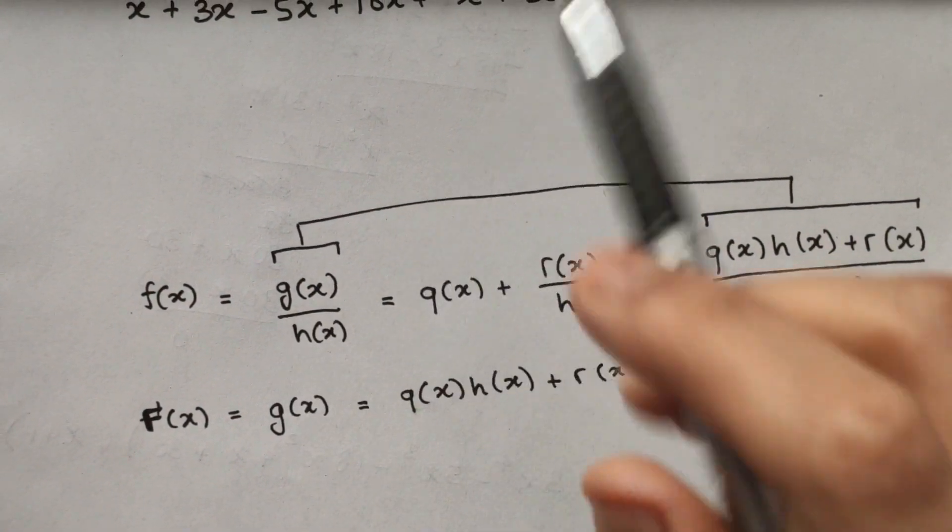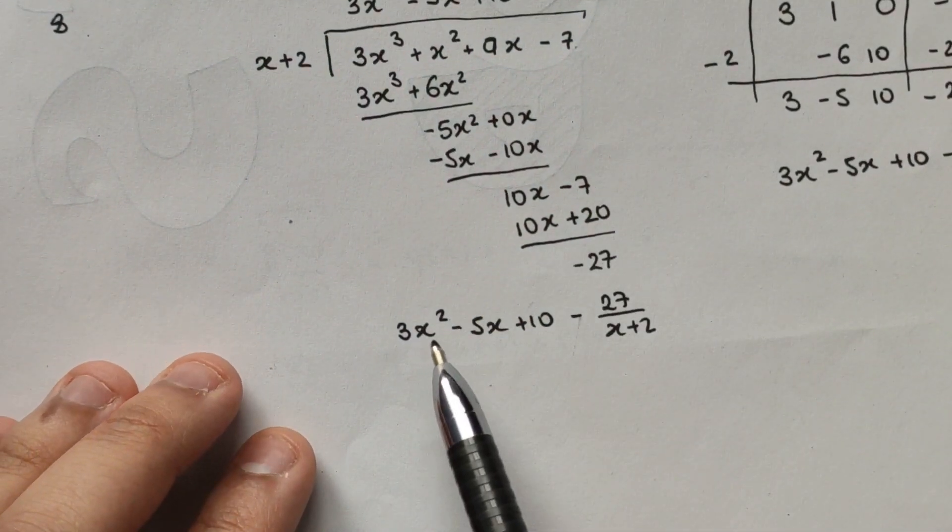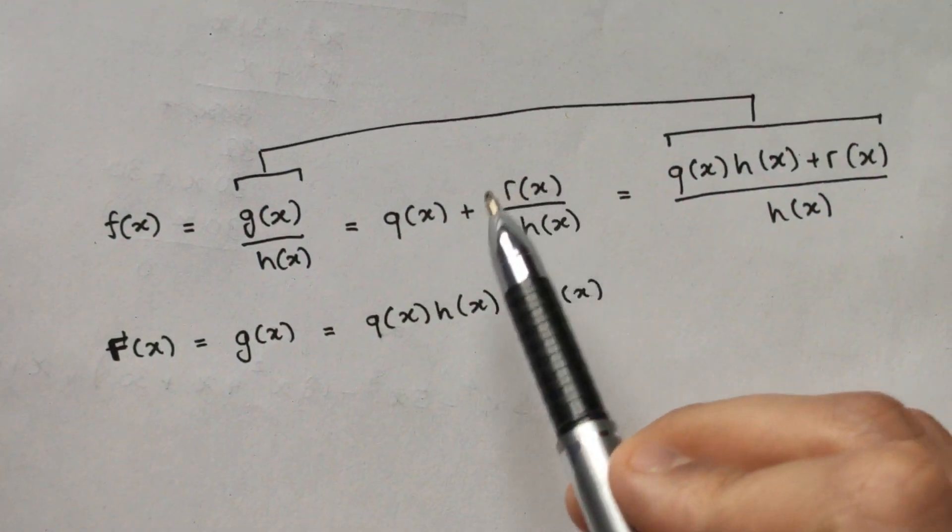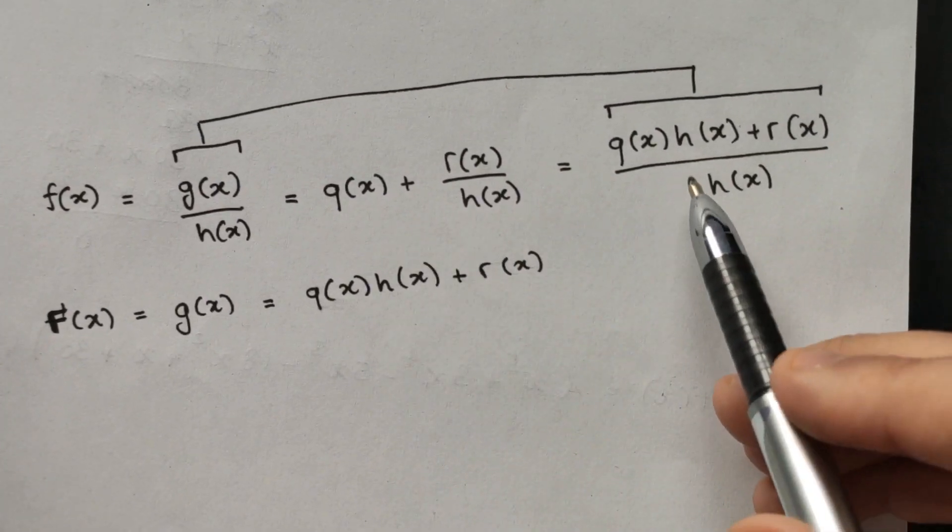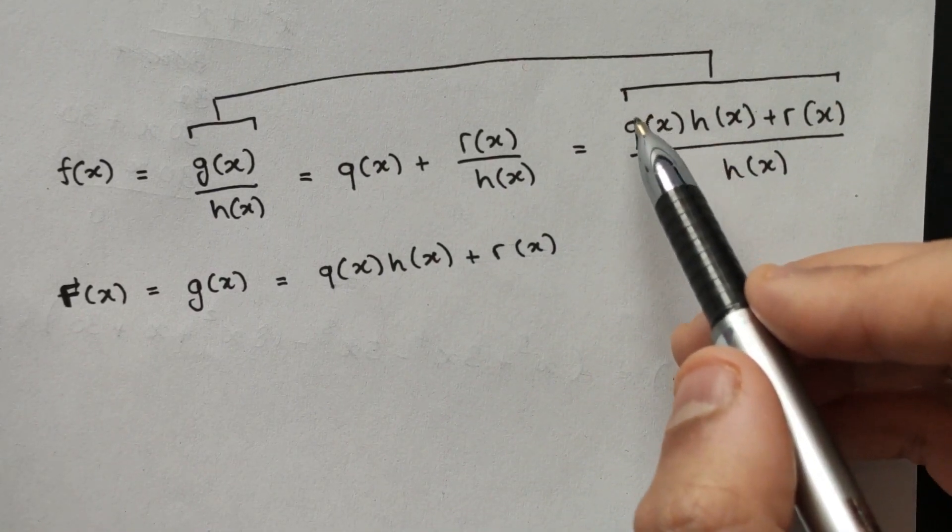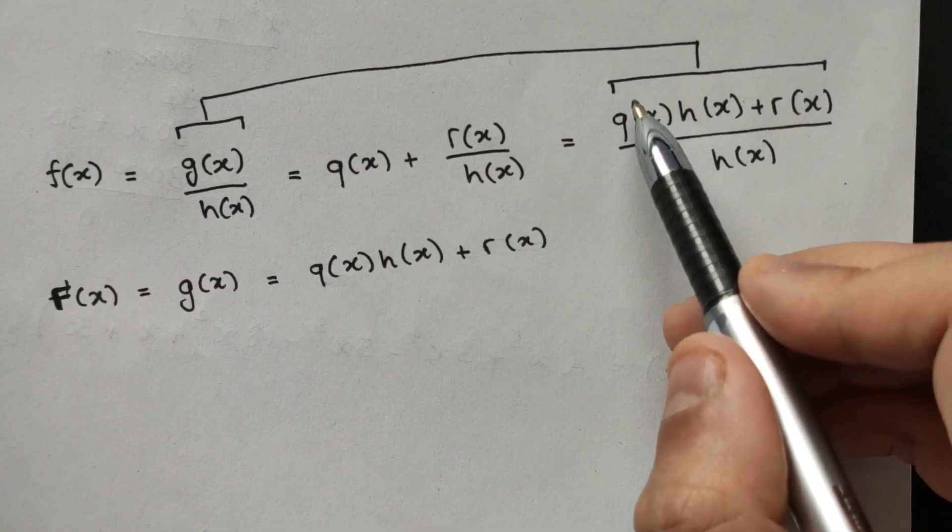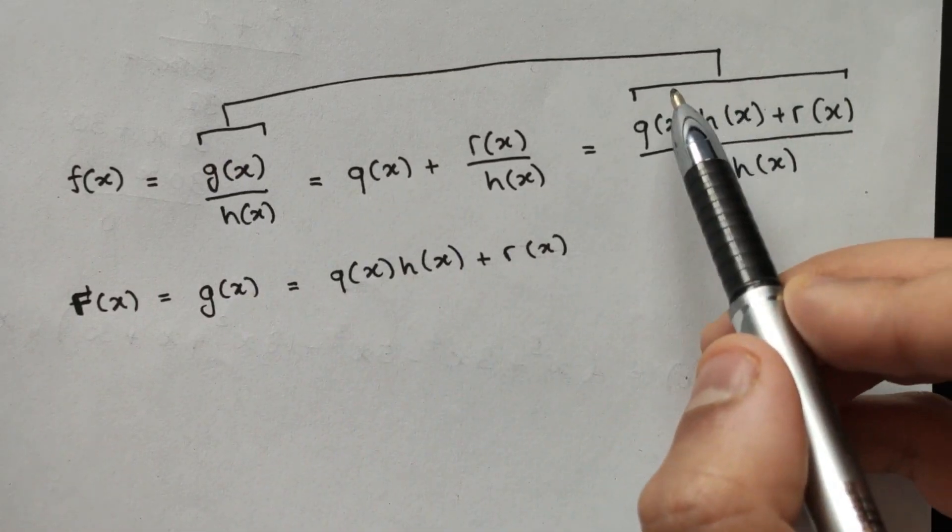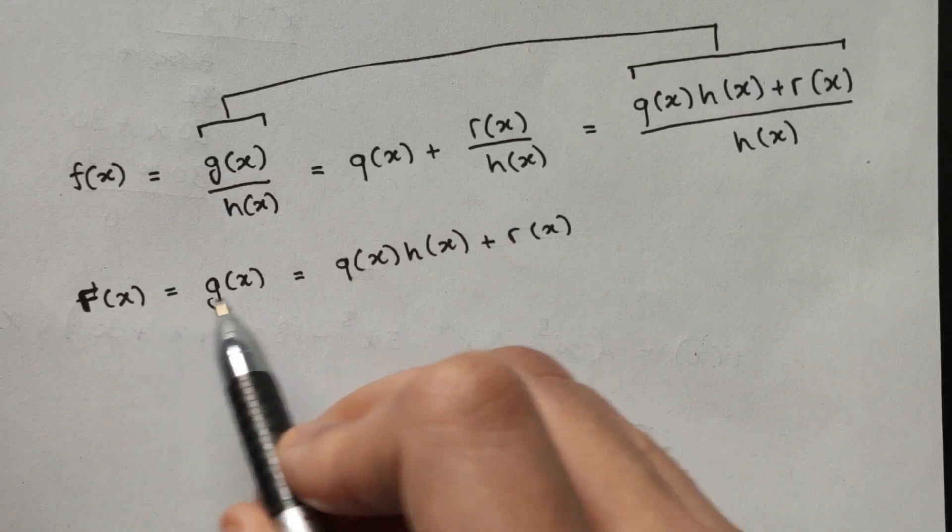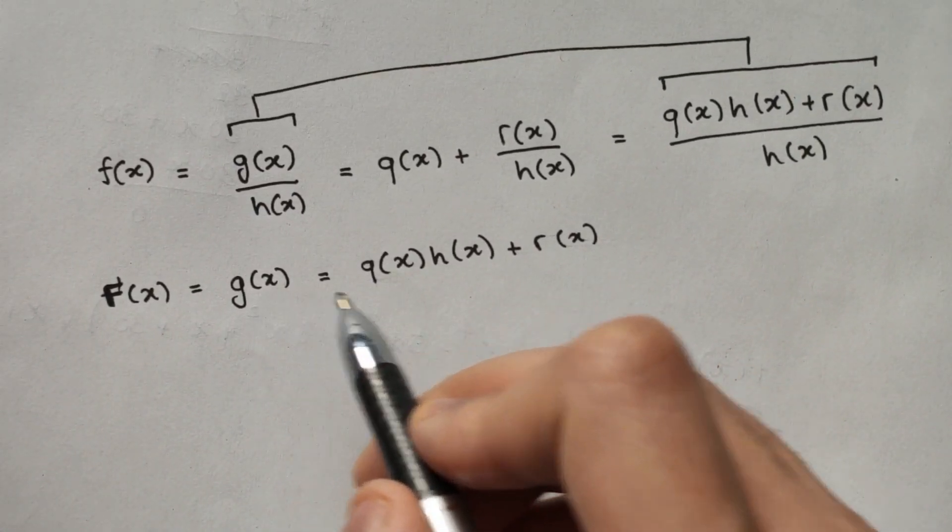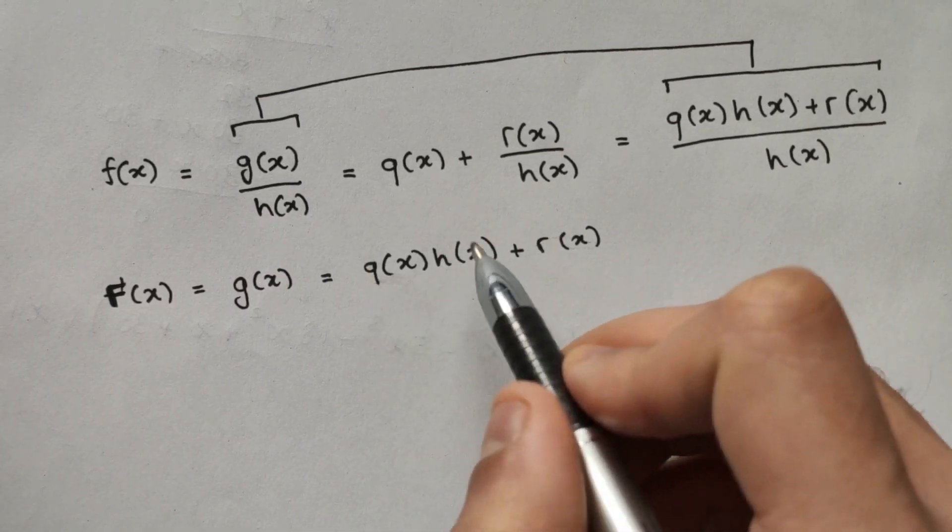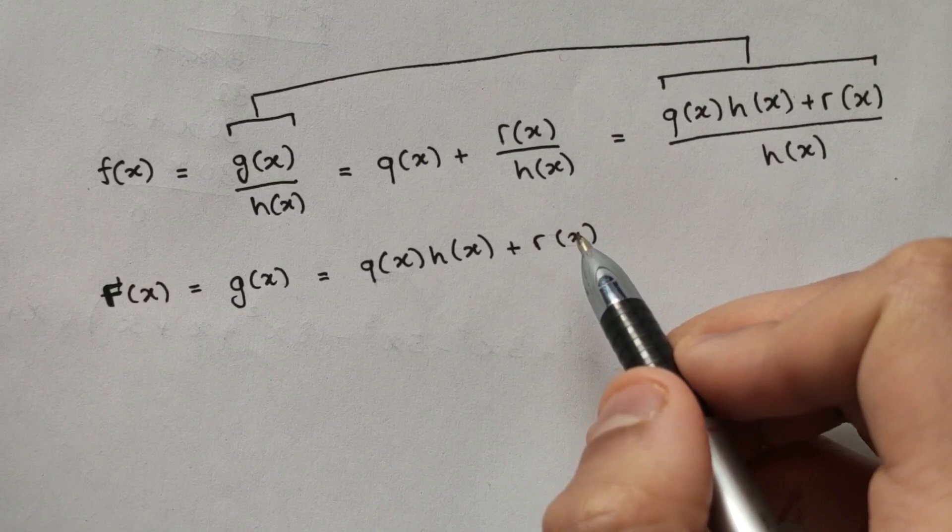And then the result obviously was here, a certain function plus the remainder divided by our initial divisor here. And if you factorize you actually obtain this at the top, right? So you have q of x multiplied by h of x and you get this function here. So what you can see is that the initial function here can be factorized into something like this. And it is indeed what we have found here in this video, that g of x can be factorized in terms of q of x, h of x plus a remainder.